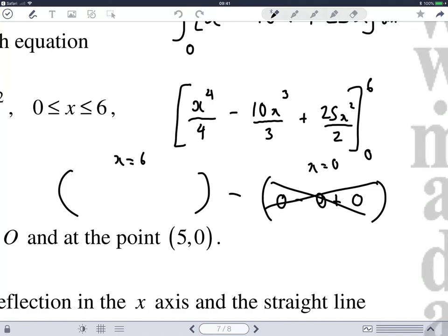Six to the four over four. Well, that's 36 squared, all divided by four, which is 324 minus six cubed times by 10, and then divided by three, which is 720, and then plus six squared, which is 36 times by 25, and divided by two, which is 450.